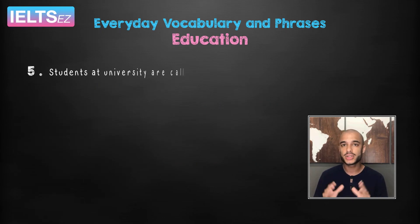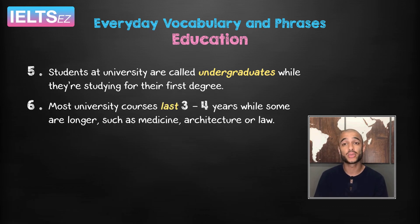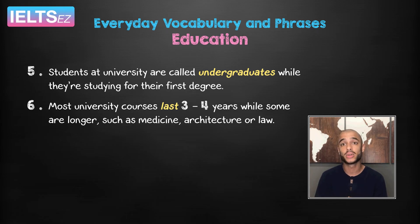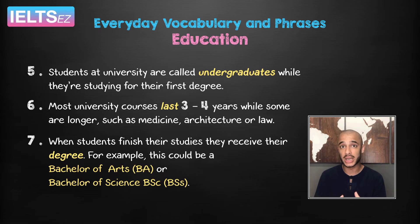Five: students at university are called undergraduates whilst they're studying for their first degree. Six: most university courses last three to four years, while some are longer, such as medicine, architecture or law. Seven: when students finish their studies, they receive their degree — for example, this could be a Bachelor of Arts or Bachelor of Sciences.